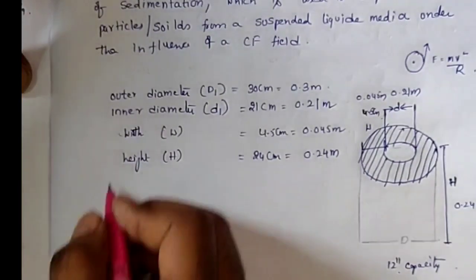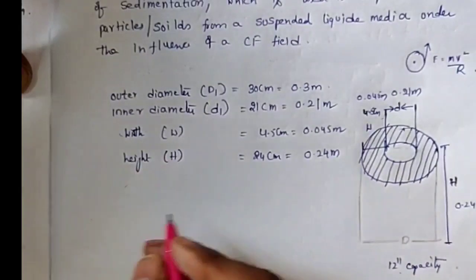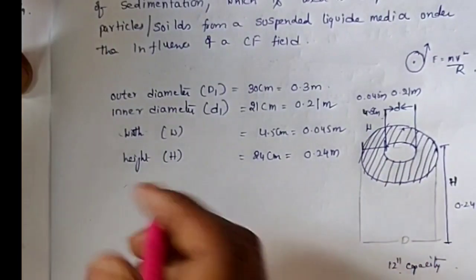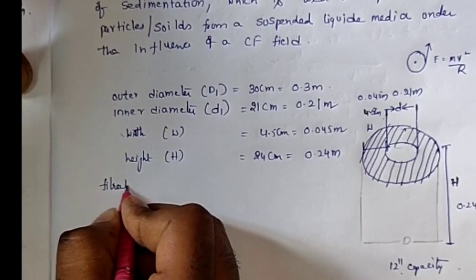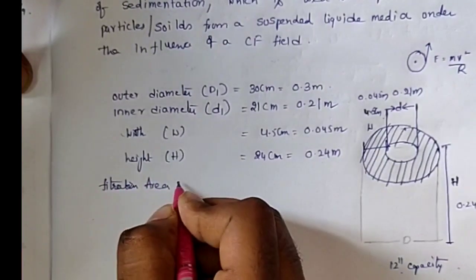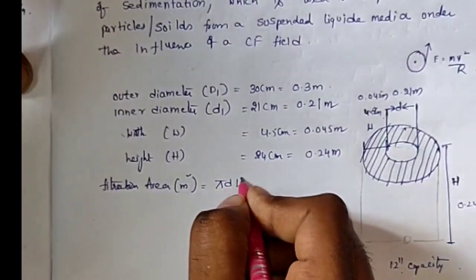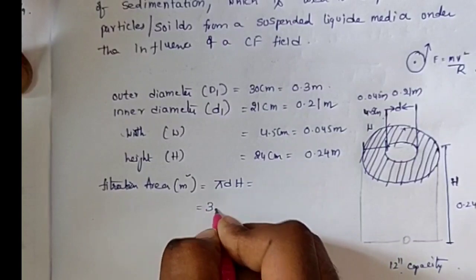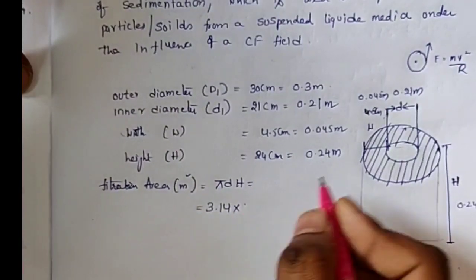We know one formula in order to find the area of a cylinder, that is the filtration area. Filtration area in meter square equals πdH, where π = 3.14 times diameter.